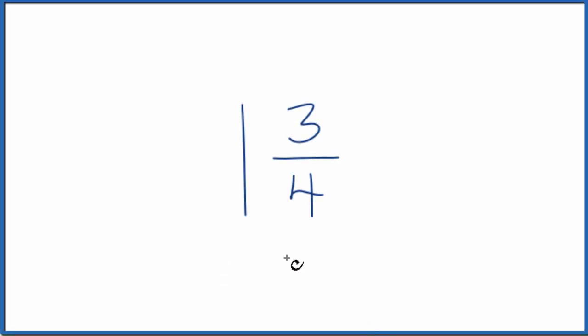Let's write the mixed number 1 and 3 fourths as an improper fraction. So this is a mixed number because we have the whole number here and the fraction. It's 1 and 3 fourths.